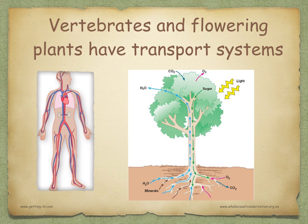Vertebrates have a circulatory system consisting of a pump and blood vessels. Flowering plants have two separate transport systems: xylem and phloem. The transport system in plants is less elaborate compared to vertebrates, because plants are less active than mammals and their cells do not need to be supplied with material so quickly. Also, the branching shape of a plant means that all cells can get their oxygen for respiration and carbon dioxide for photosynthesis directly from the air by diffusion.